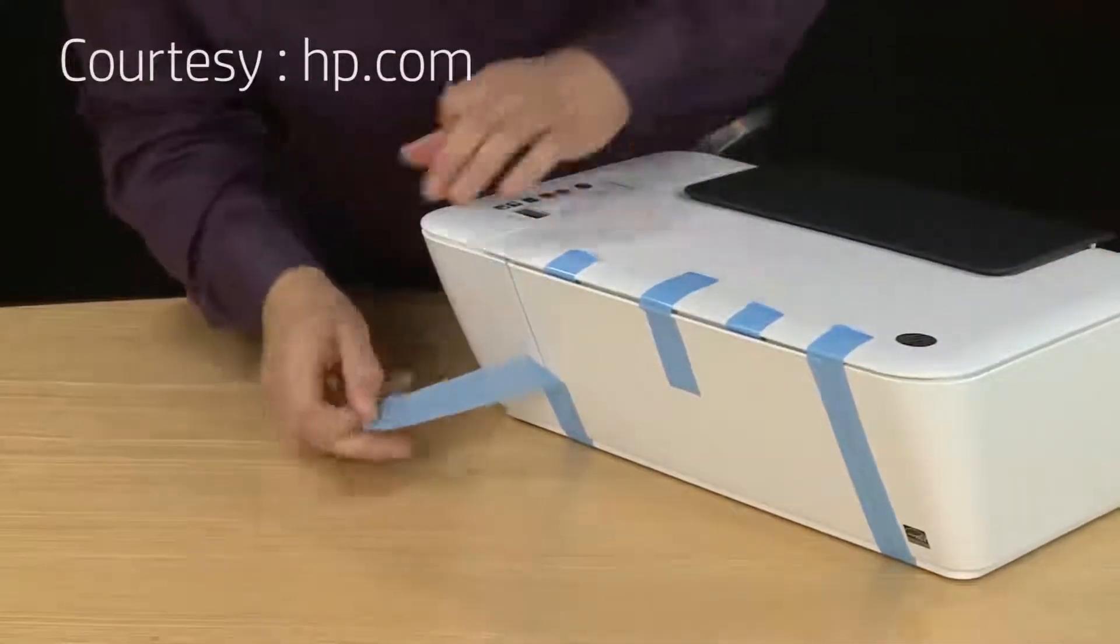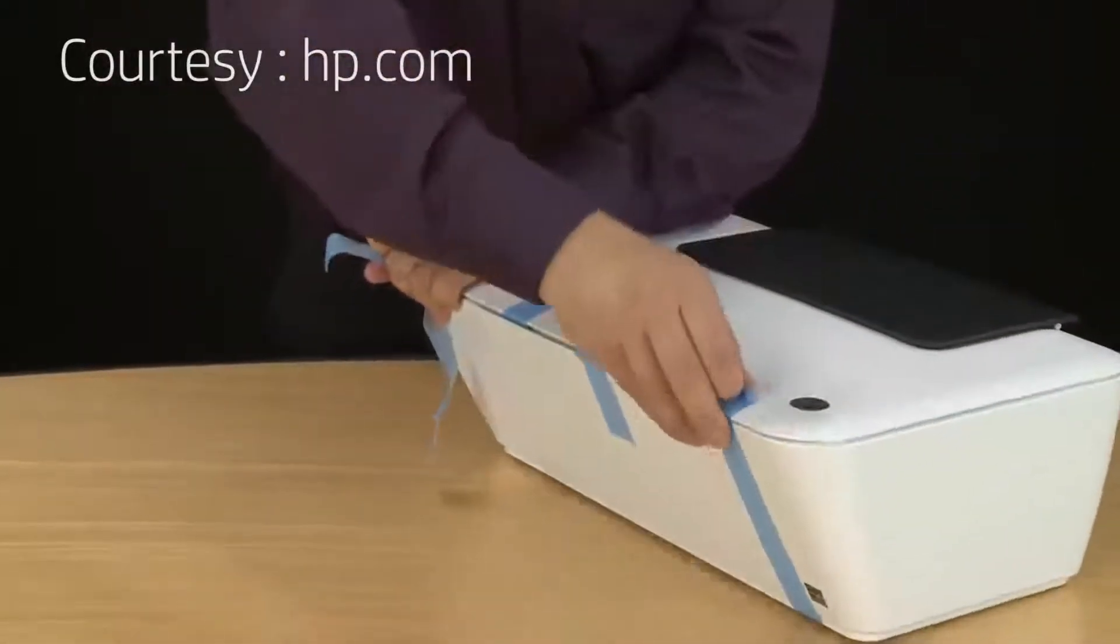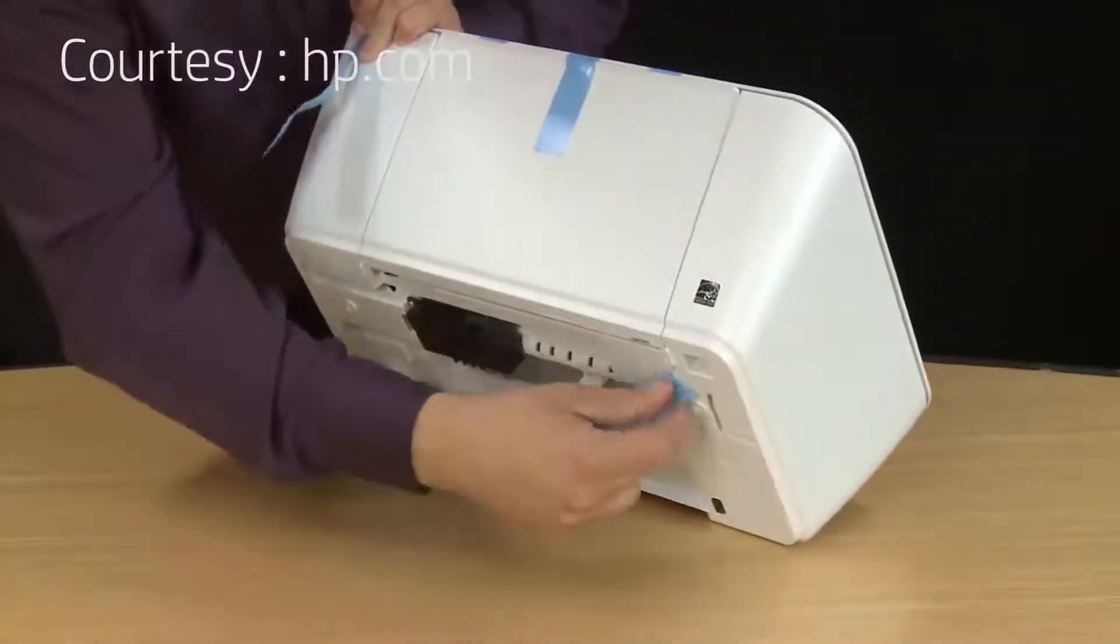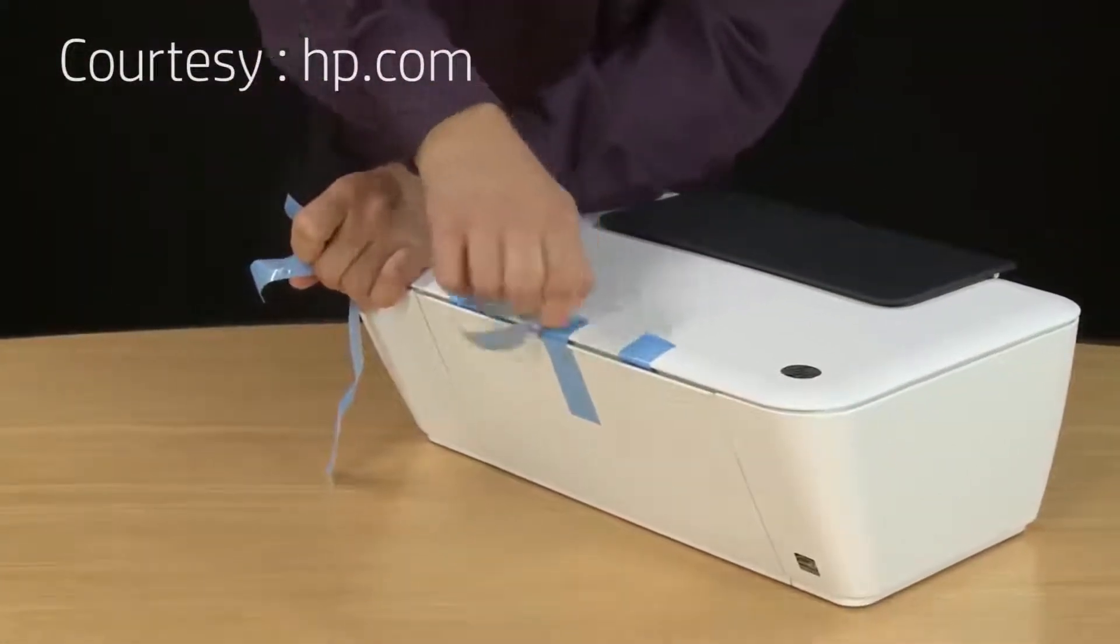Take off the large strips of tape beginning at the top and then running to the underside of the printer. There should be two of these pieces of tape. You can lift up the printer without damaging it. Then remove the last piece of tape that's holding the output tray closed.